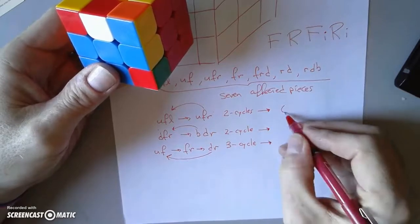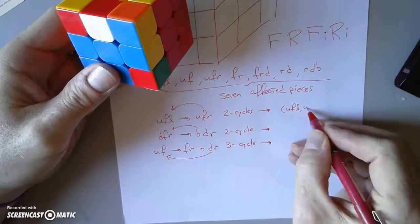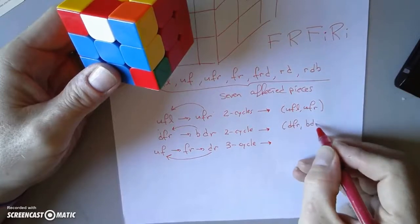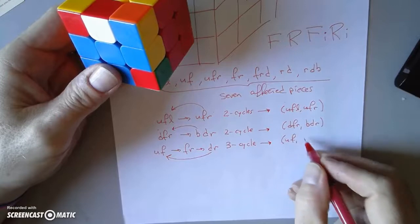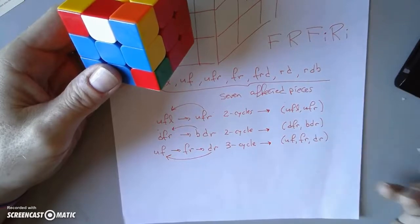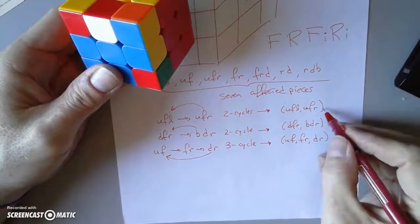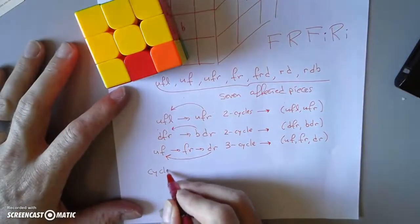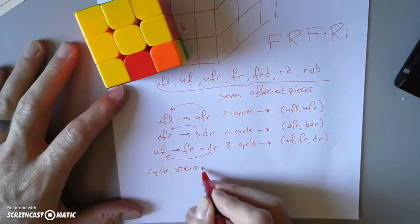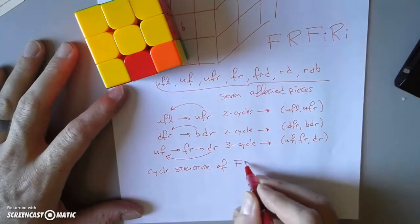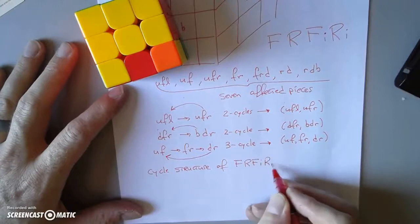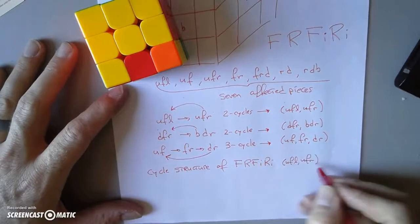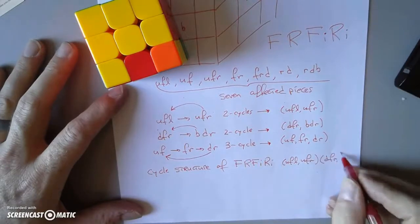Now let's use cycle notation. Cycle notation just doesn't bother with arrows — the parentheses contain a cycle and list all the pieces being moved in order. This is a two-cycle and this is another two-cycle. This is a three-cycle. So all together, the cycle structure of F R F⁻¹ R⁻¹ is: (UFL UFR)(DFR RDB)(UF FR DR).